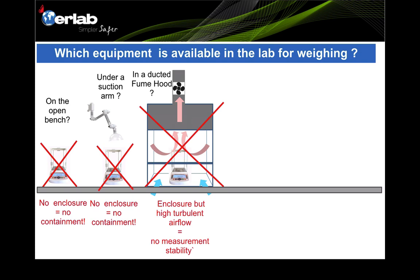The third situation is using a ducted fume hood. No doubt there is enclosure and protection, but the problem is fluctuations — because a ducted fume hood generates high turbulence airflow inside the hood, making it near impossible to get very accurate measurements for a high accuracy balance. For instance, with an analytical balance, 4 to 6 decimal place measurements are near impossible to perform inside ducted fume hoods.